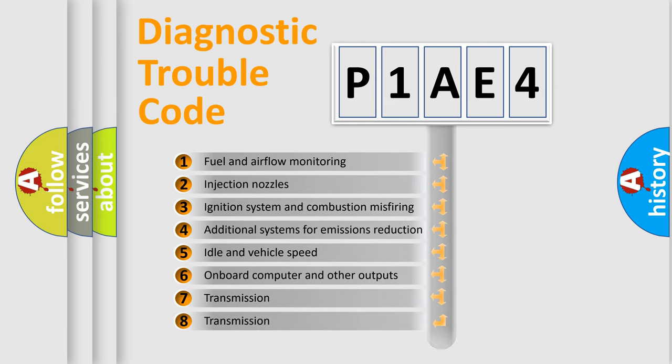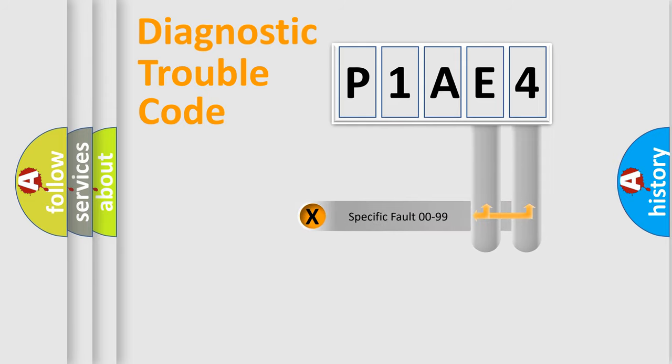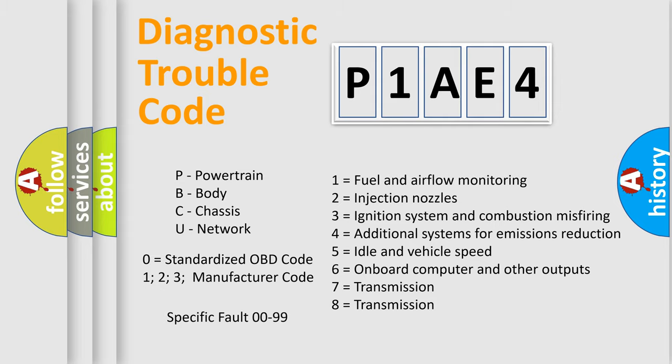The distribution shown is valid only for the standardized DTC code. Only the last two characters define the specific fault of the group. Let's not forget that such a division is valid only if the other character code is expressed by the number zero.